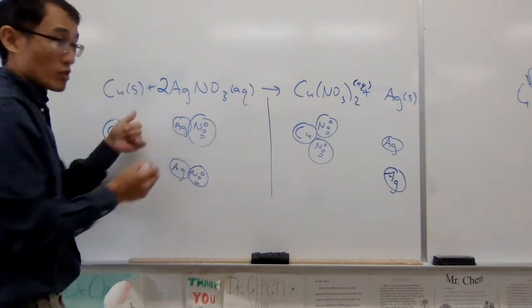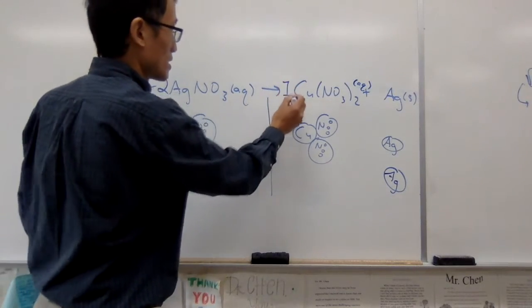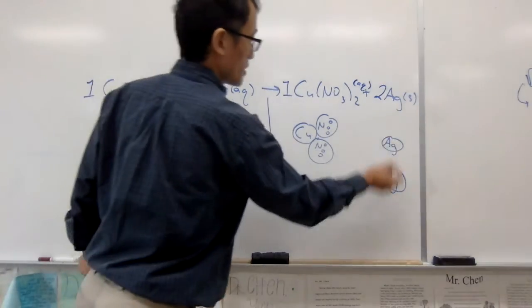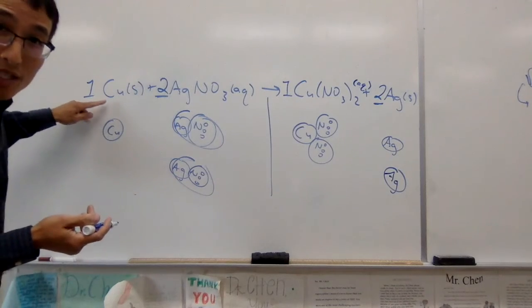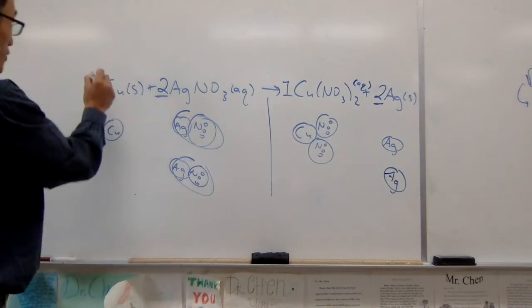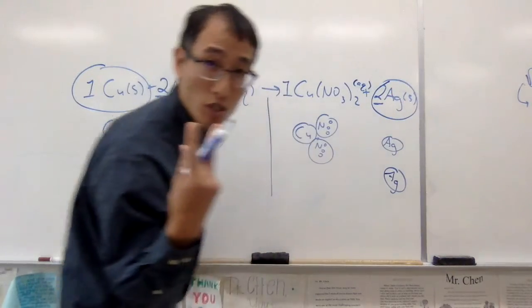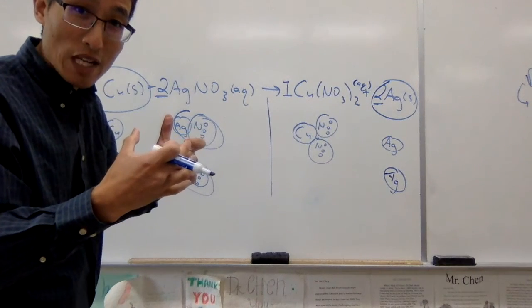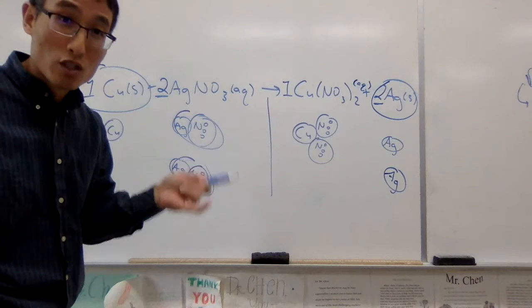I need to add a coefficient of 2 here: I have one copper (implied coefficient of 1), one copper nitrate, and two silver nitrate, and two silver solid. Looking at the relationship between copper and silver, this is not a one-to-one relationship anymore. For every one copper reacting, two silvers are forming. So for every one copper that goes out into solution, two silvers are sticking onto that wire.